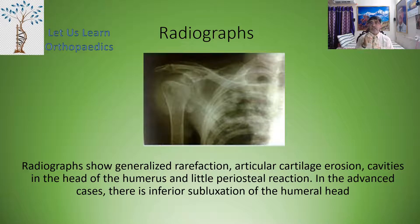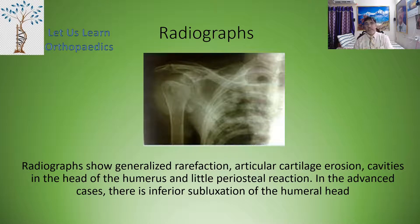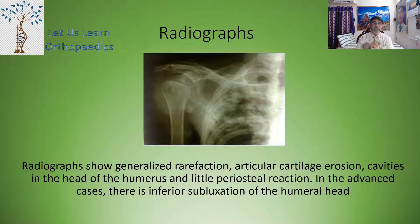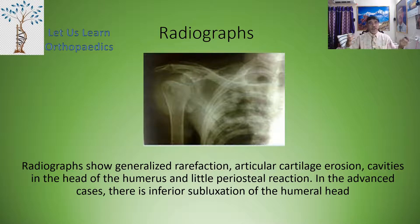You can see in this particular x-ray. In advanced cases, there is an inferior subluxation of the humeral head. If you look carefully at the x-ray shown in the slide, there is also associated pulmonary tuberculosis. This is a very common picture in cases of shoulder tuberculosis.